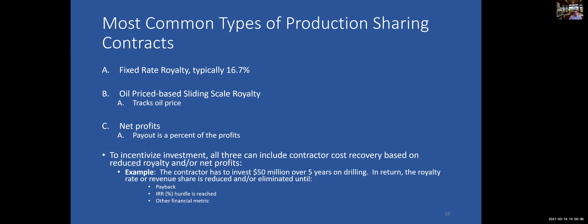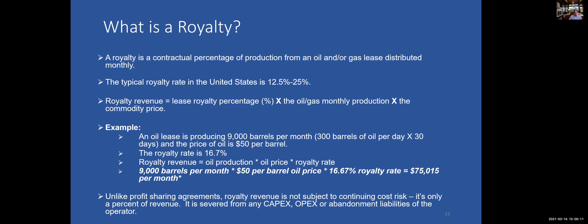What is a royalty? A royalty is a contractual percent of production, typically from 12.5% to 25% — just a percent of the total revenue. Royalty revenue is not subject to continuous cost risk; it's only the percent, severed from any capital expenditure, opex, or abandonment liabilities. So it's much lower risk to own a royalty than a working interest.